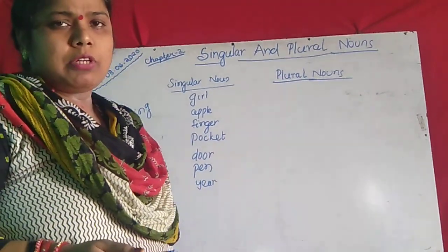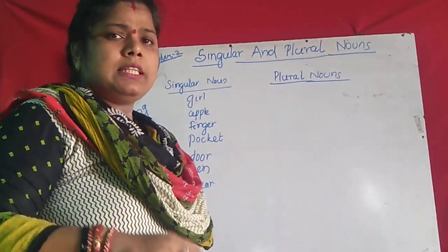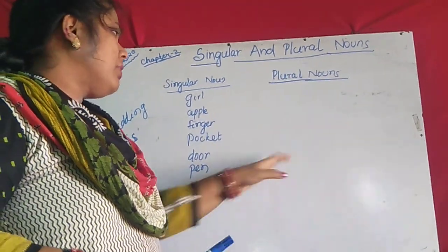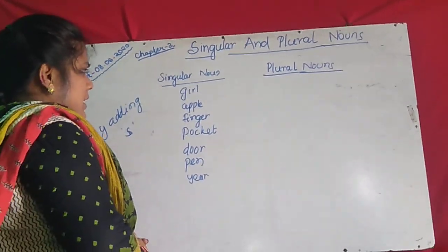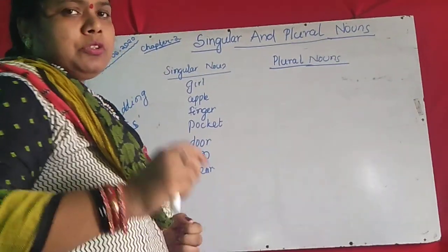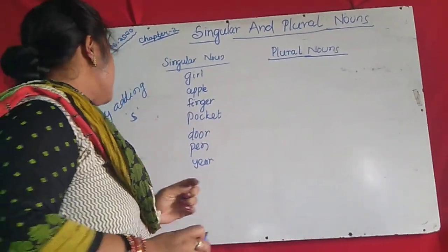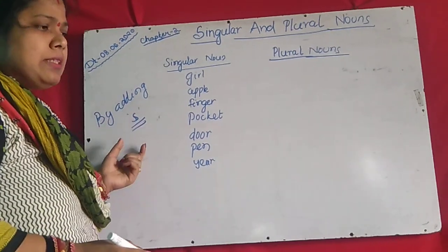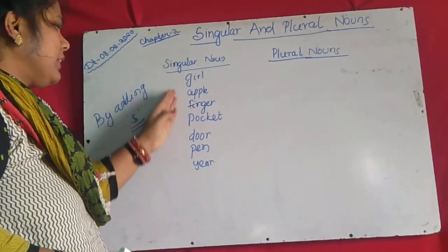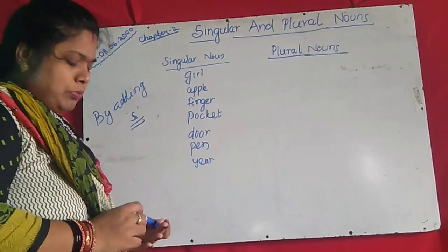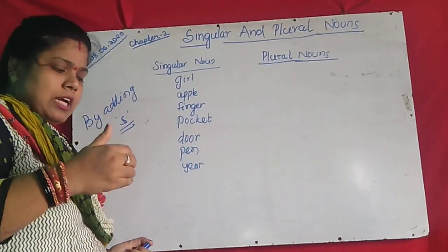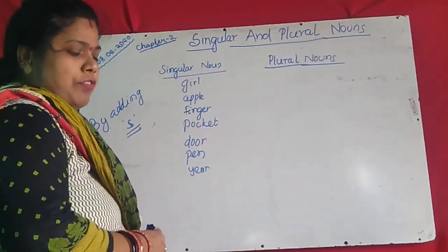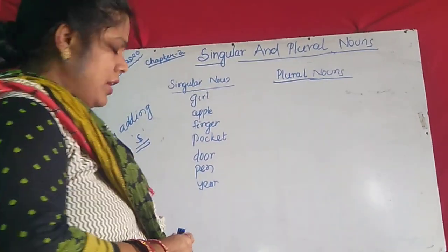From singular noun to plural noun: one pen becomes two — what? One pencil becomes three — what? One finger, five fingers — what? How will you change? The first rule to change singular to plural is by adding S. You simply add S to even words and that changes to plural. I will try to make you understand the different rules of singular and plural nouns one by one.